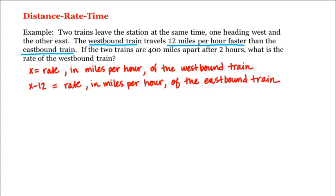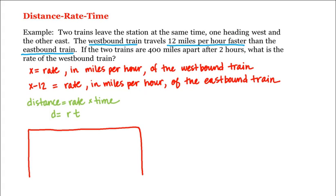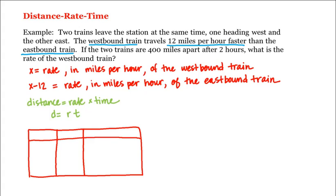Now we're going to use the famous formula that distance is equal to rate times time — in symbols, d equals r times t — to help us solve this problem. Let's keep track of things in a table, with r for rate, t for time, and d for distance, with rows for the westbound train and the eastbound train.